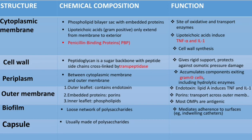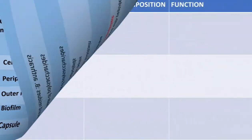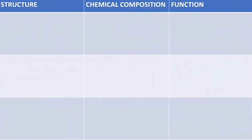The next structure is the capsule. Capsules are usually made of polysaccharides, but in some bacteria — specifically Bacillus anthracis — the capsule is made up of amino acid residues, simply a protein. The function of the capsule is to protect the bacteria against phagocytosis.